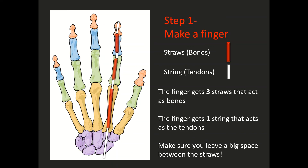You will also need some cut up pieces of straws that are going to act like your bones, and long pieces of string which are going to act like your tendons. So you're going to start off with one finger. This finger is going to get three small pieces of cut up straw that are going to act as the bones. And then the finger is going to get one long piece of string that reaches from the tip of the finger past the wrist of the hand.